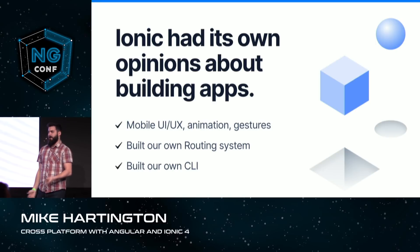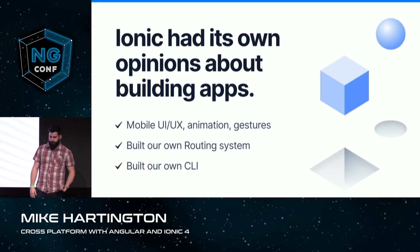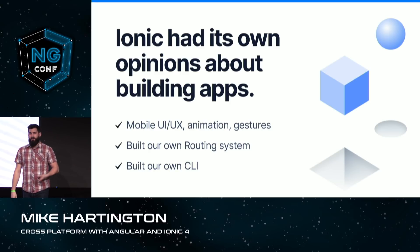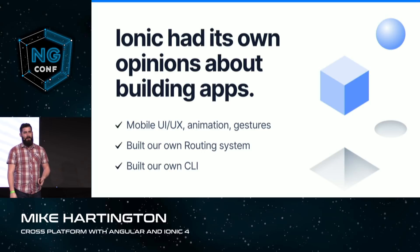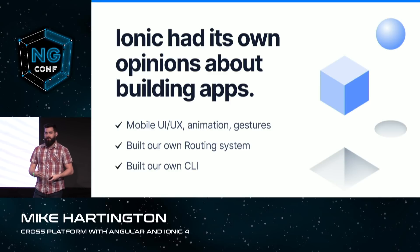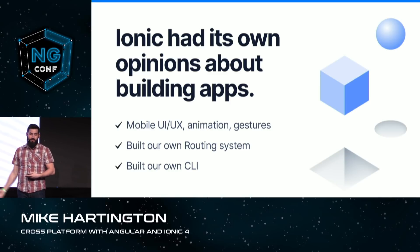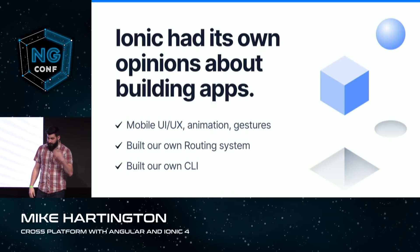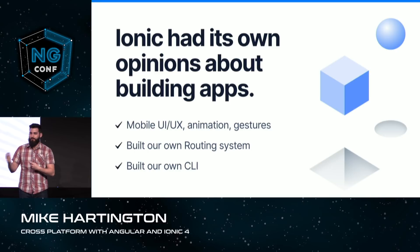We wanted to build our own router because we had really strong opinions on how routing should work. We also built our own CLI because we had our own strong opinions about how an app should be built, how that process should work, and what dependencies should be used. We went through and built all this stuff, maintained it from version 2 to version 3, and up until version 4, we were planning to maintain that for the next release. But then we noticed something.